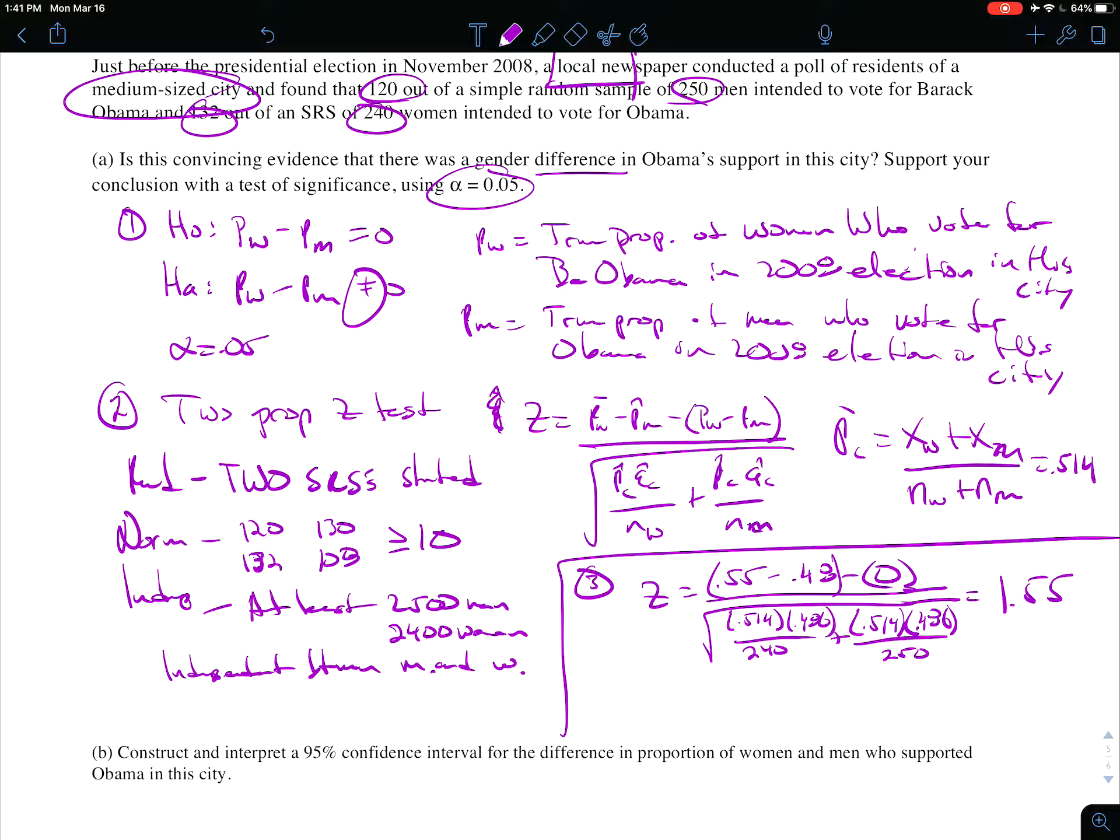All of that put together gives us 1.55 as our z-value. So it was two tails, so when we go look this up, we want two times the probability that z is greater than 1.55. And so we look it up in the table, we get 0.0606, so two times that is 0.1212. This is our p-value.